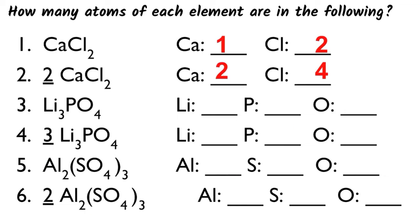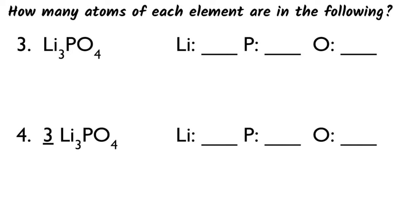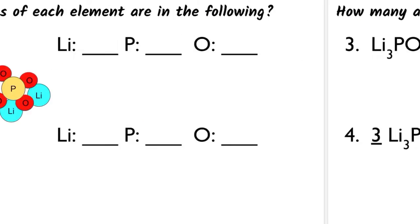Number three, Li3PO4. There's three different elements here. Notice that there is no subscript next to the P, but the P is a capital letter and so is the O, so those are two different elements. I have three lithiums because there's an invisible coefficient of one and one times three is three. One times one is one. One times four is four. So three lithiums, one phosphorus, four oxygens.